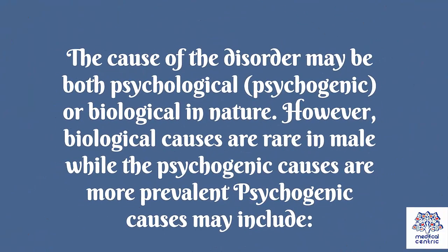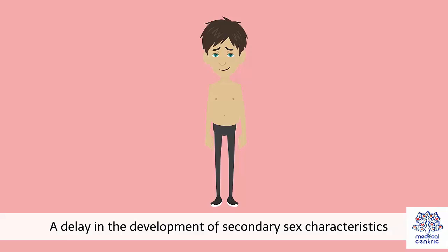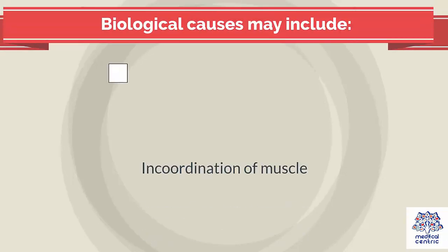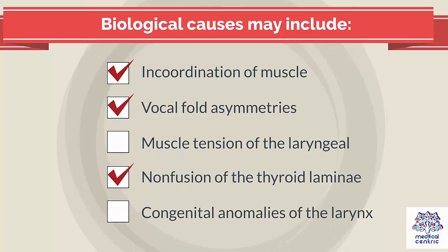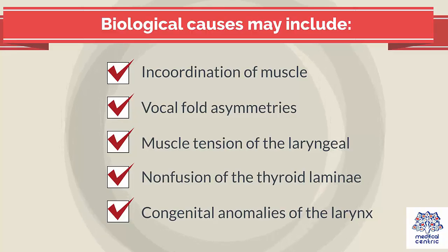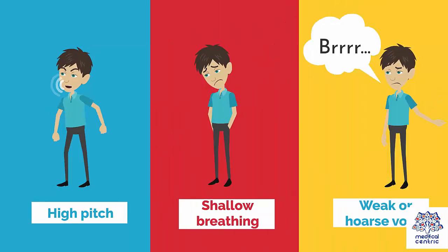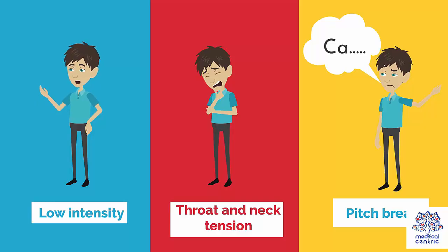The cause of the disorder may be both psychological or psychogenic, or biological in nature. However, biological causes are rare in males, while psychogenic causes are more prevalent. Psychogenic causes may include a delay in the development of secondary sex characteristics and emotional stress. Biological causes may include in-coordination of muscle, vocal fold asymmetries, muscle tension of the laryngeal, non-fusion of the thyroid laminae, and congenital anomalies of the larynx.